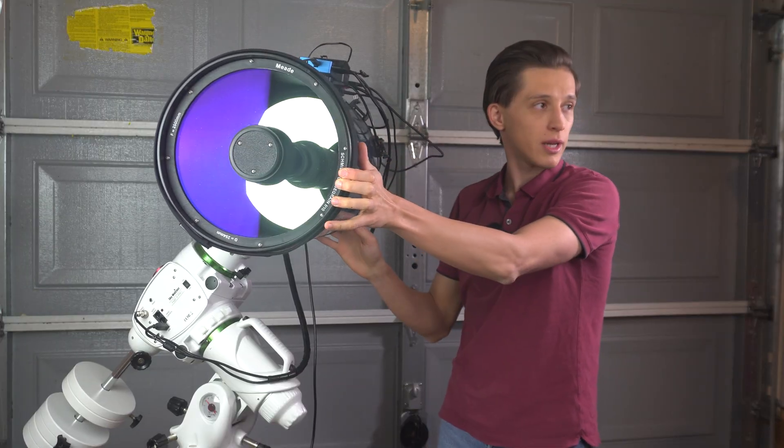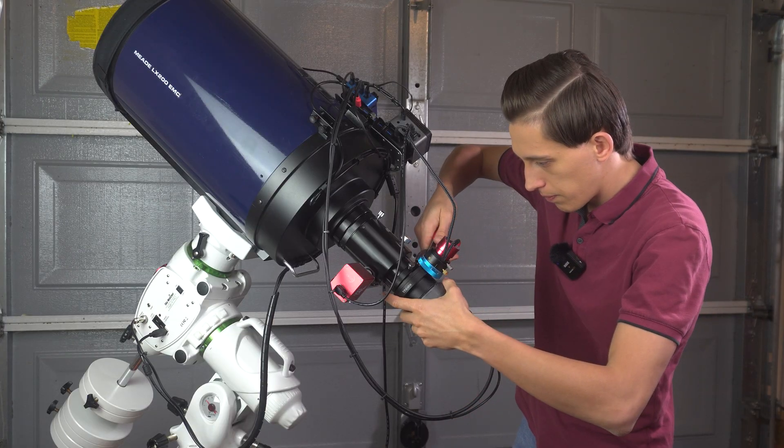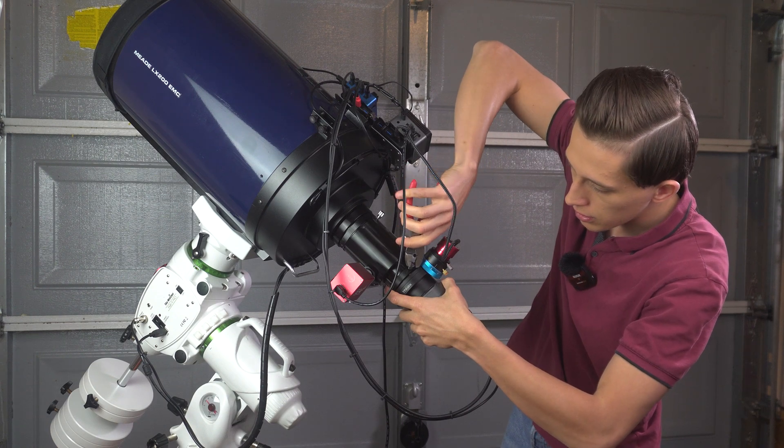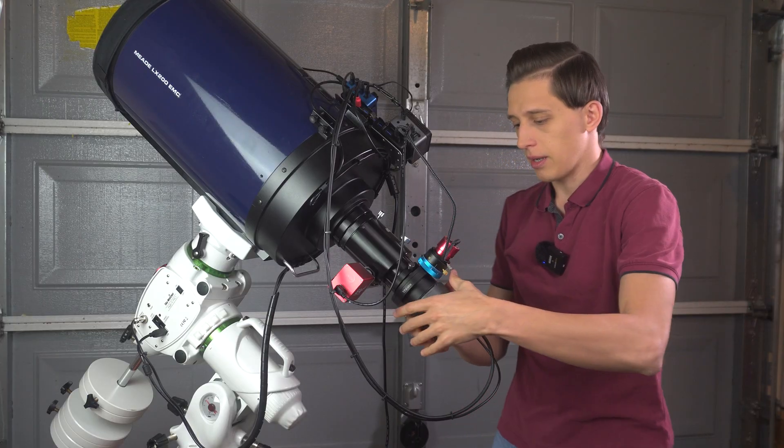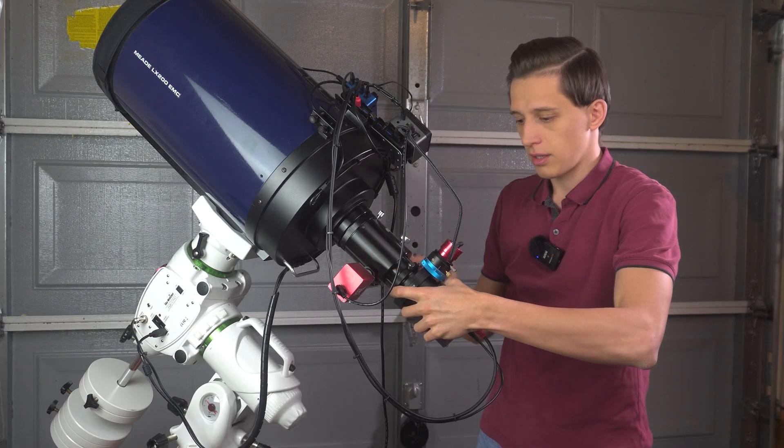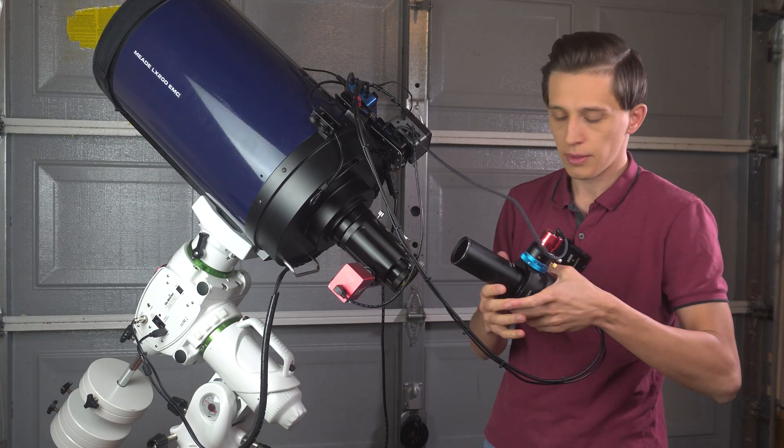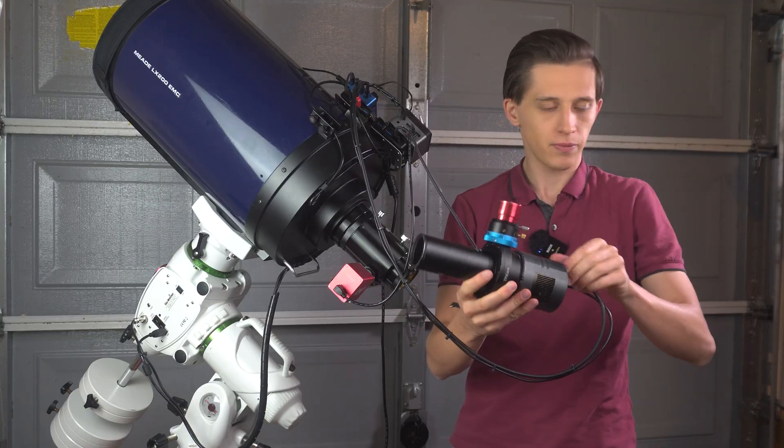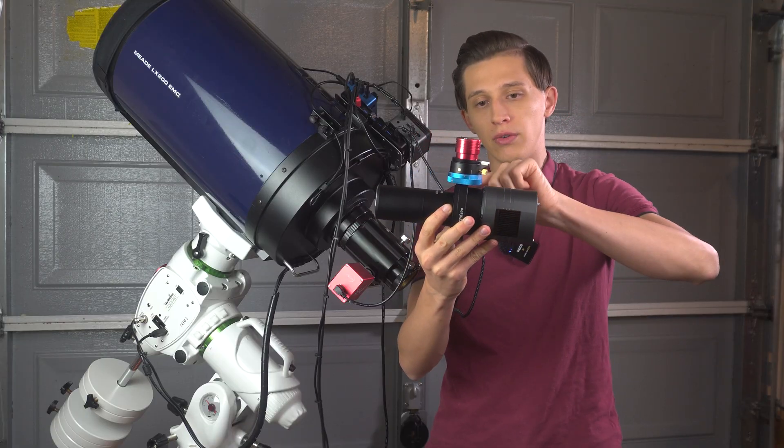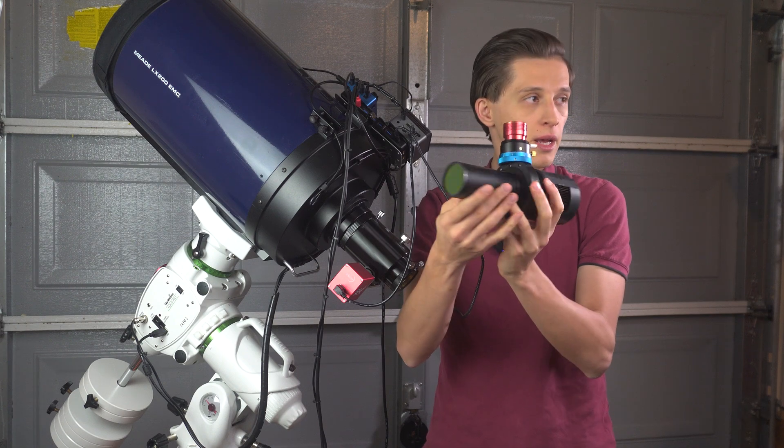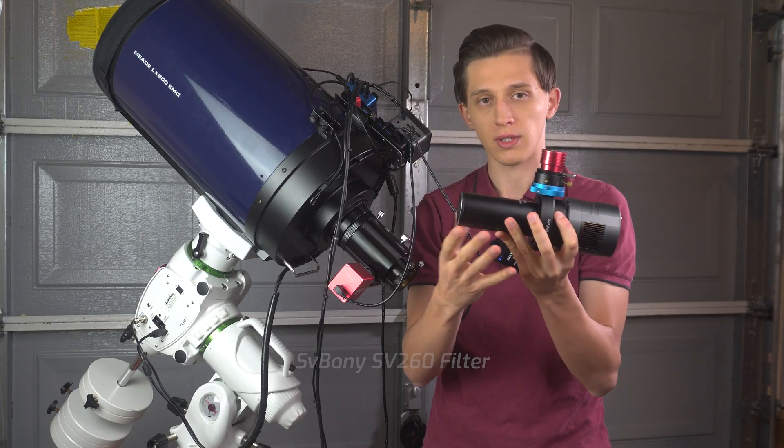This is by the way how the mirror looks like. Talking about the reducer, let me actually show it to you. The only flaw of the focuser is that it's not that crucial but you're not threading the reducer but you basically insert it into a two inch position focuser. But yep, this is how, let me unplug it, this is how the imaging train looks like. We got the camera, we got the off-axis guider, the guide camera and here is the reducer itself.